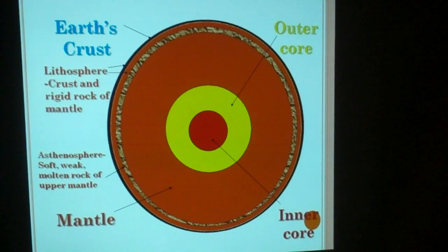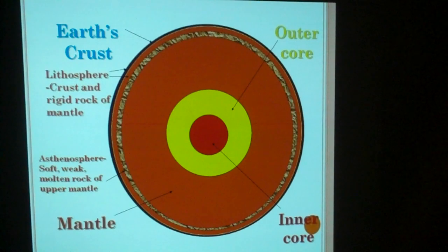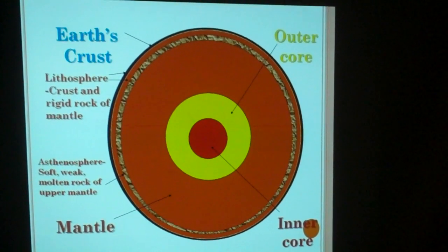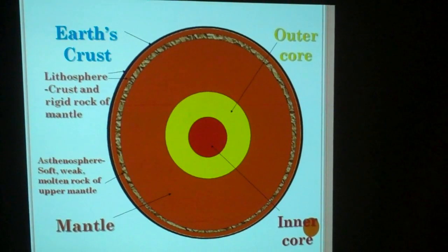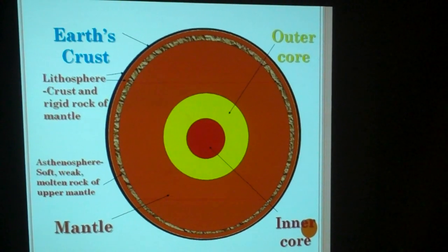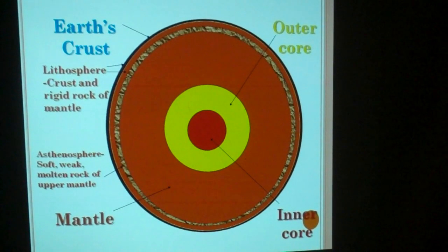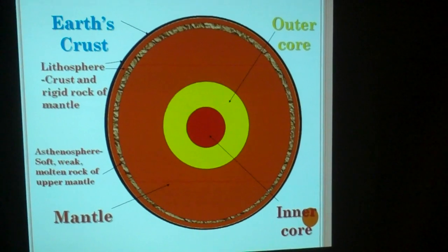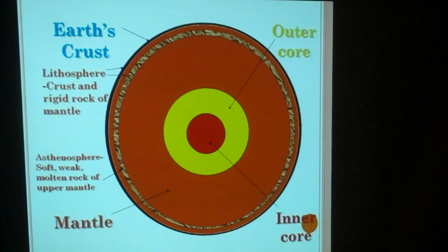The lithosphere is what we're going to be talking about with this unit. It is all of the crust and the very top edge of the mantle that's hard — that's what we walk on, it's the rigid rock. Just below the lithosphere is the soft, weak, molten layer of magma underneath that part of the mantle. The rest of the mantle is pretty much hard, solid rock, but the top layer is molten. The word asthenosphere comes from the Greek 'asthen,' which means weak.